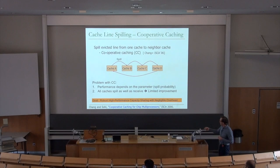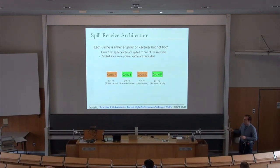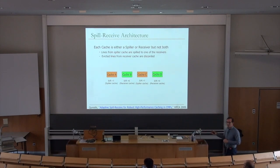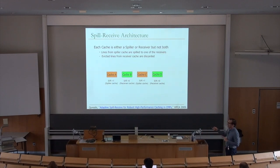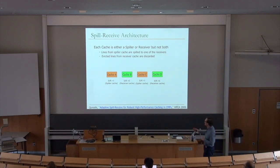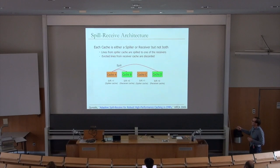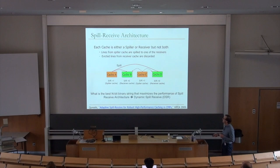The next work introduces a more robust, high-performance mechanism for capacity sharing. The idea: designate each cache as a spiller or receiver, but not both, because some caches are oversubscribed while others are underutilized. A single bit in the tag store indicates whether a cache is a spiller or receiver. Evicted blocks from spillers go to receivers; evicted blocks from receivers are simply discarded.